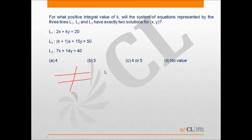So let us take case 1 where L1 and L2 are parallel. For that we get 2 by k plus 1 is equal to k upon 15 which is not equal to 20 upon 50. So here we get k into k plus 1 is 30.